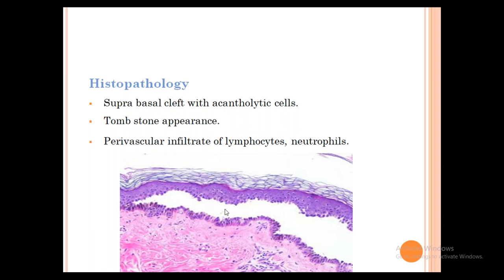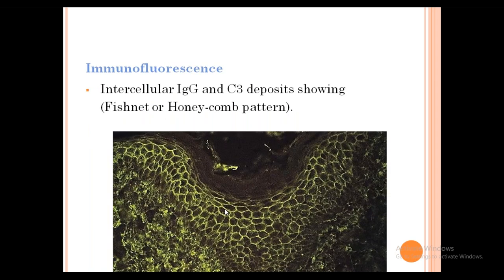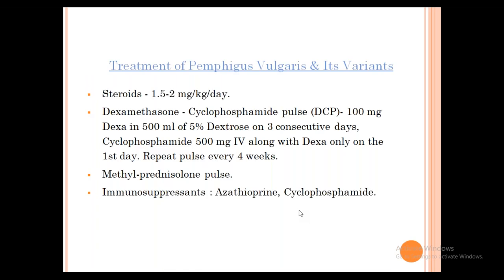Direct immunofluorescence (DIF): take a perilesional punch biopsy. You find intracellular IgG and C3 deposits in a fishnet or honeycomb pattern — this is characteristic of Pemphigus Vulgaris. Indirect immunofluorescence is also performed. Treatment: Pemphigus Vulgaris requires high-dose steroids — 1.5 to 2 mg/kg/day (higher than standard). Pulse therapy option: three days of high-dose Dexamethasone (100 mg) with Cyclophosphamide in 5% dextrose on one of those days, or methylprednisolone pulse.